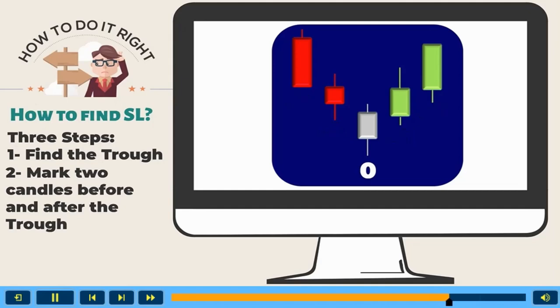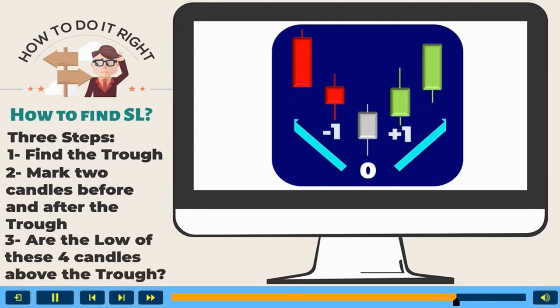Step 3, if the low of these four candles are sequentially higher than the low of zero trough candle, you have identified a standard swing low.